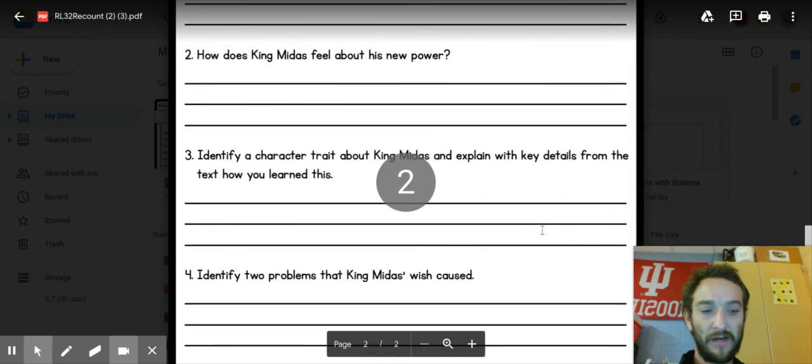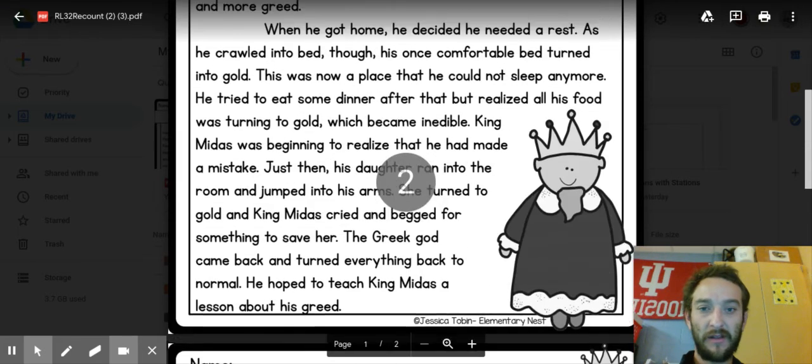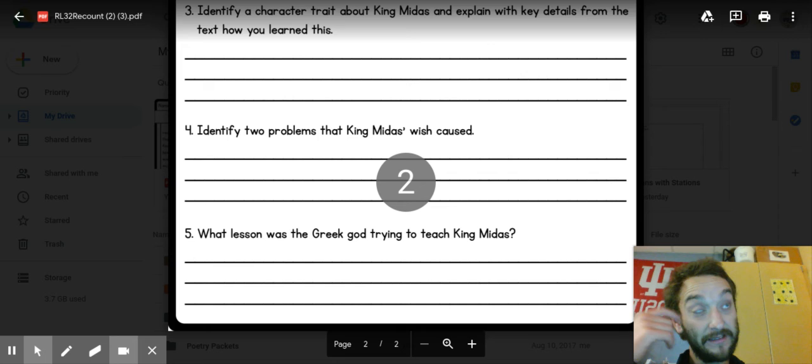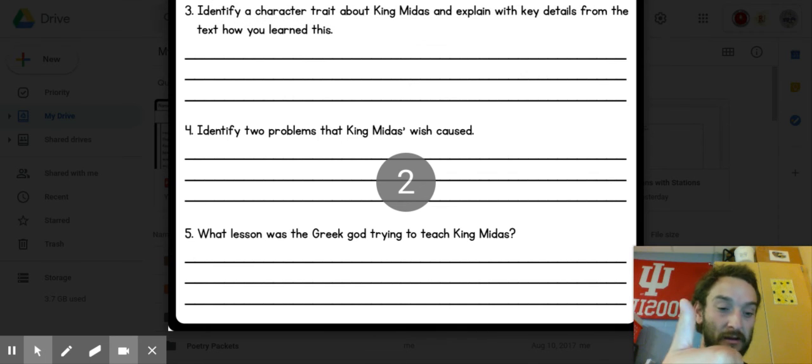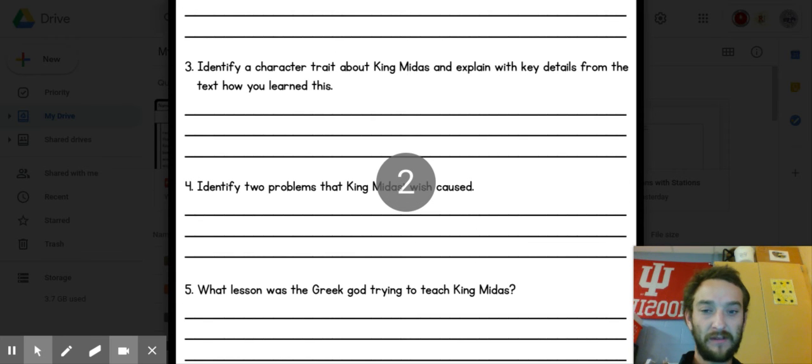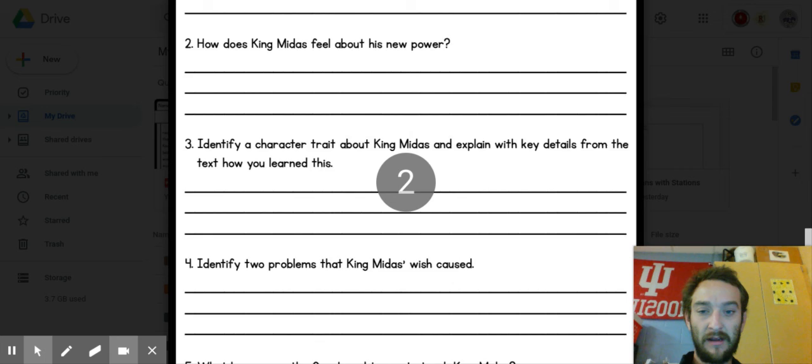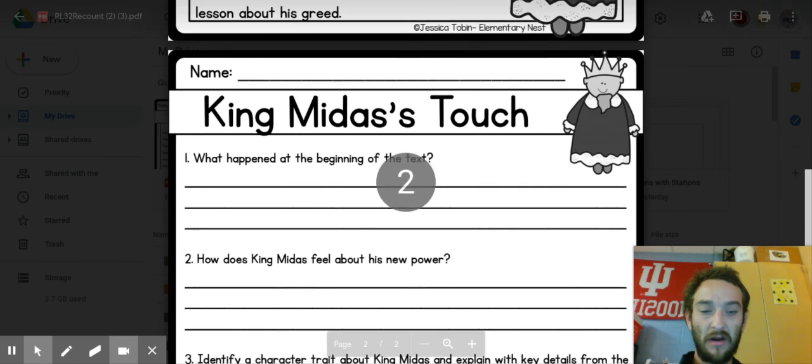Be sure you're reading the full article and giving me those nice restate complete sentences. Complete sentences, capital letter to start, period to end. Be sure that you capitalize the names like King Midas and Greek god. Or any other names you might pull out of there.